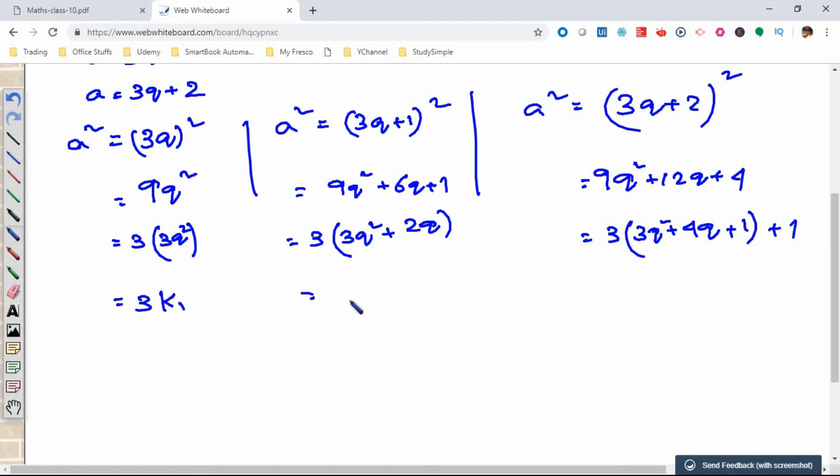Consider 3q² as k1, 3q²+2q as k2, and 3q²+4q+1 as k3, where k1, k2, and k3 are positive integers. So we can write these in the form 3m, 3m+1, or 3m+1. Hence we can write either 3m or 3m+1.